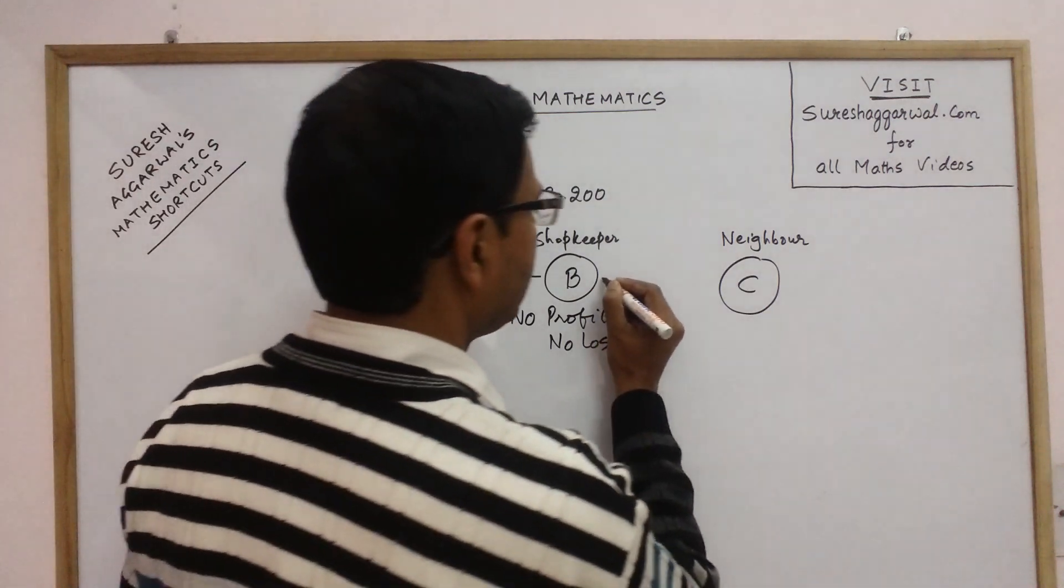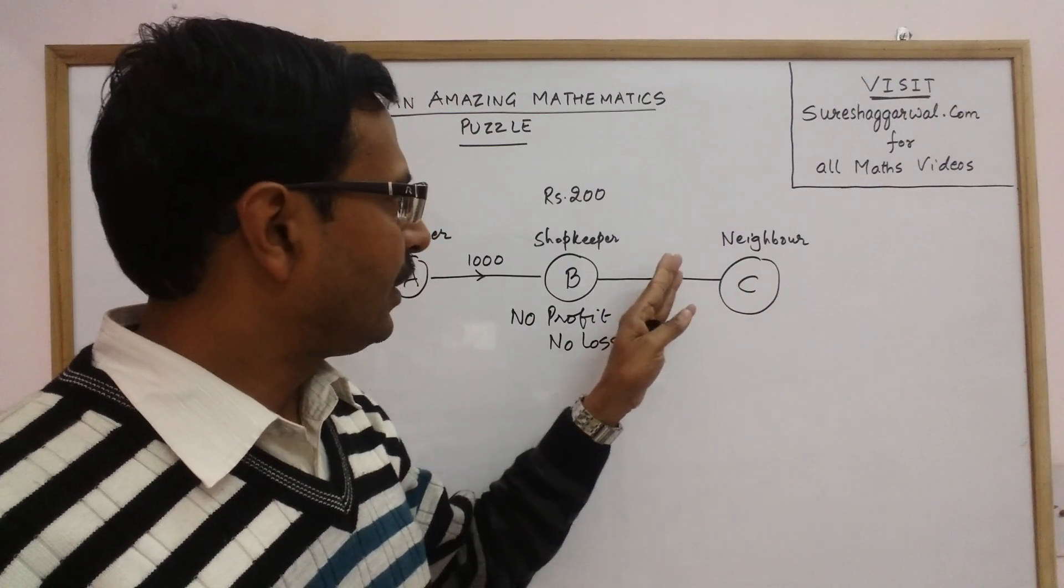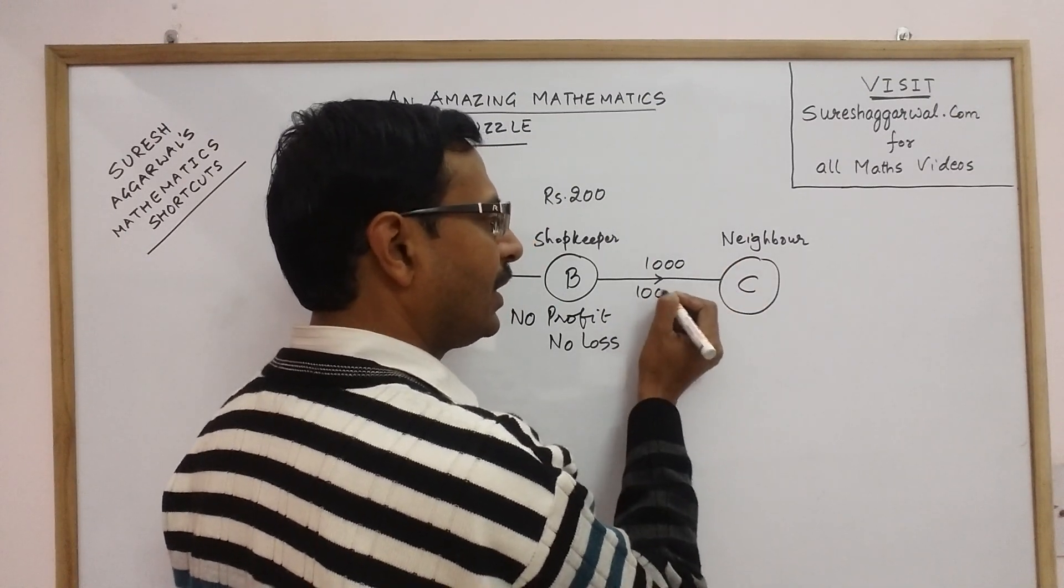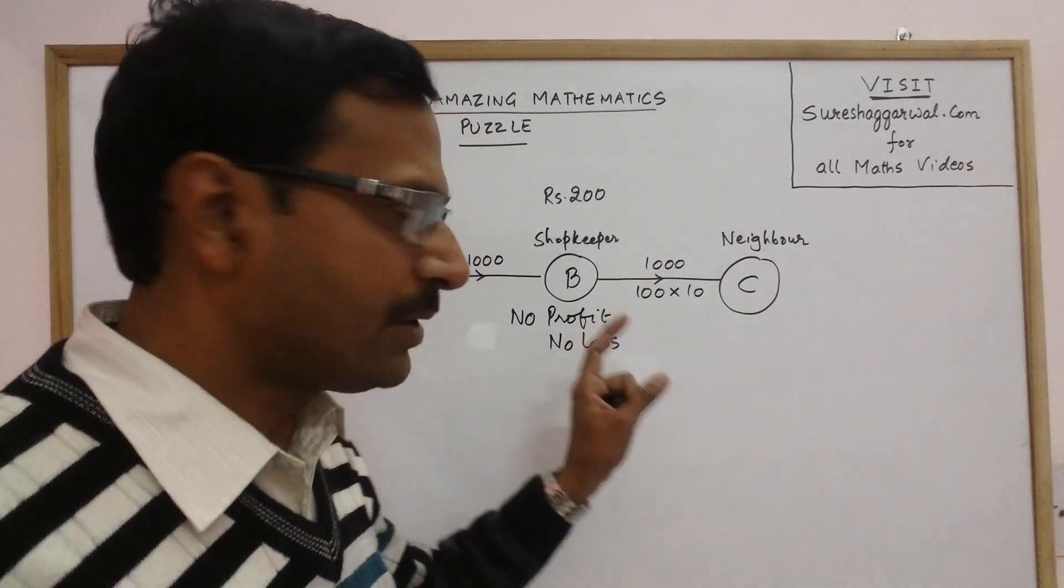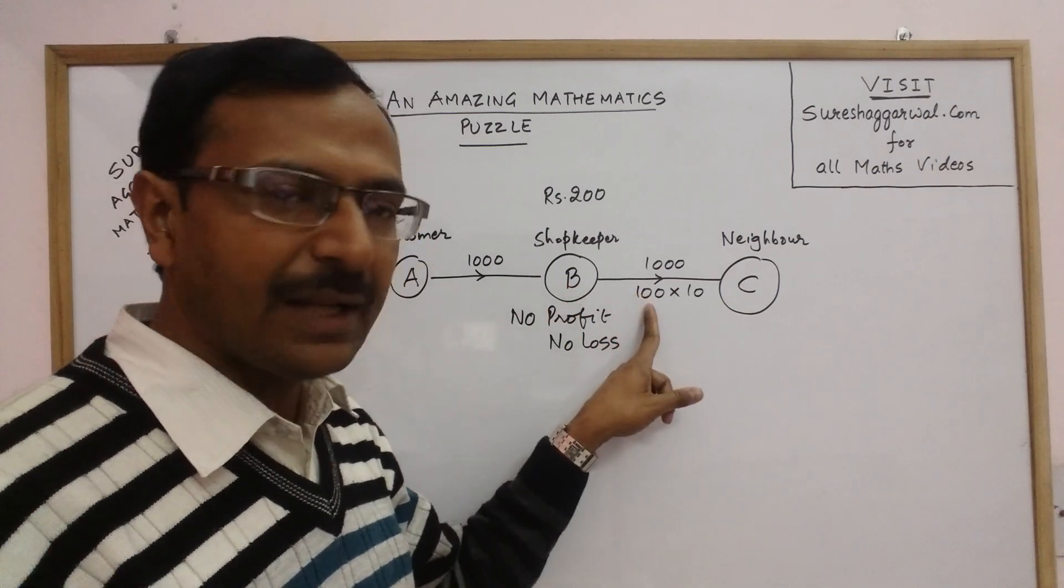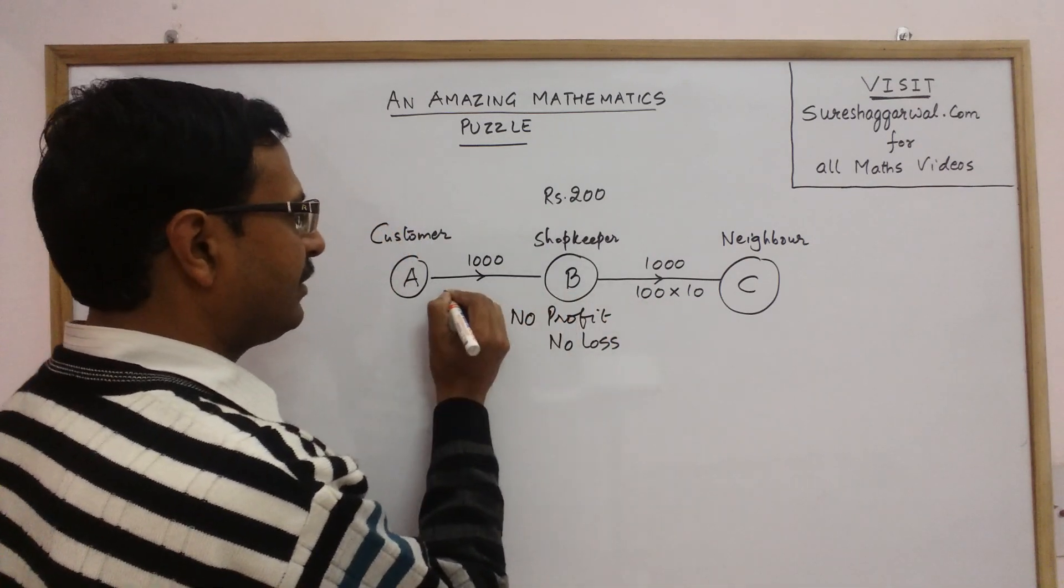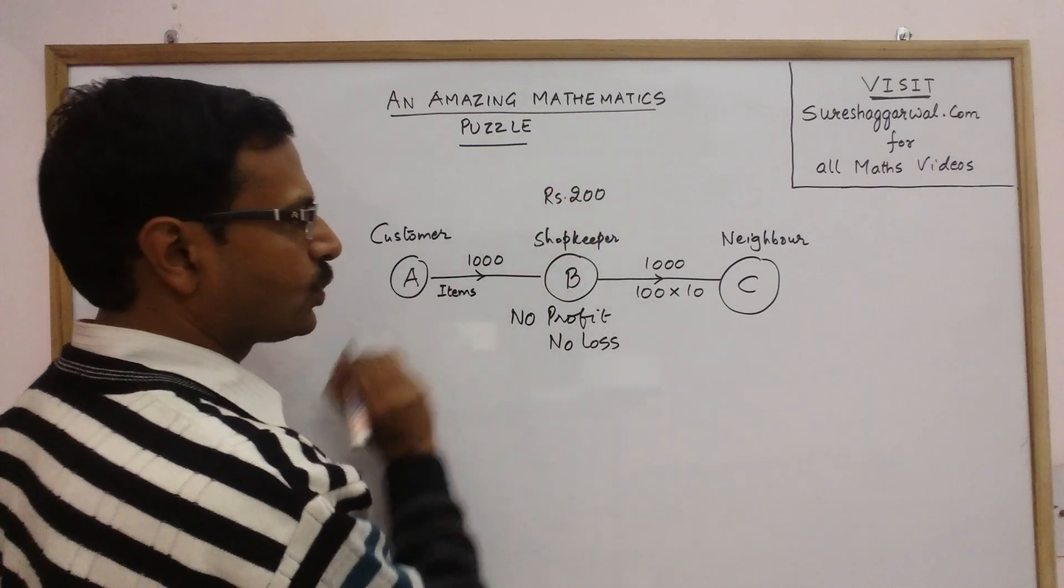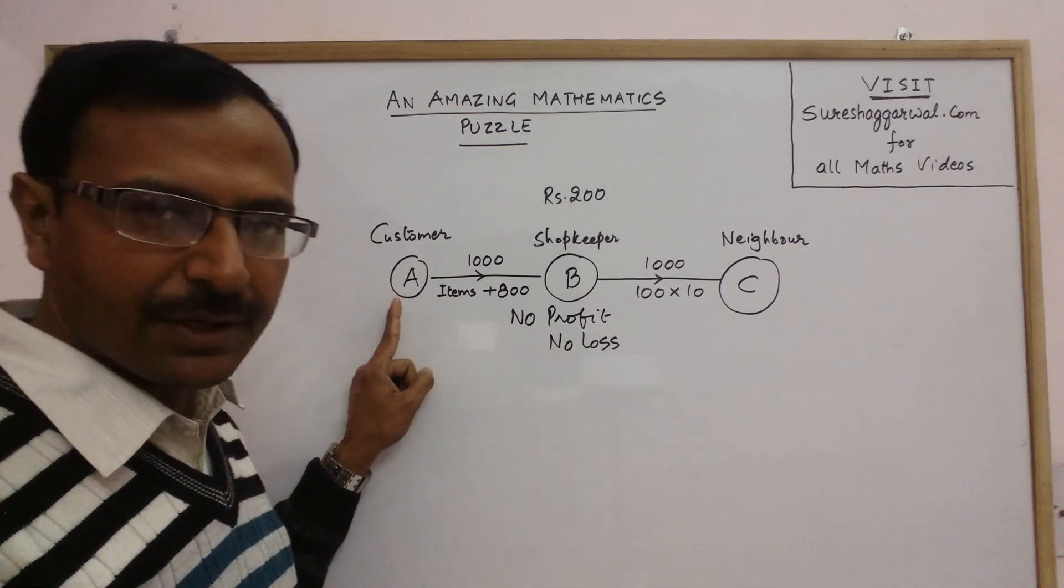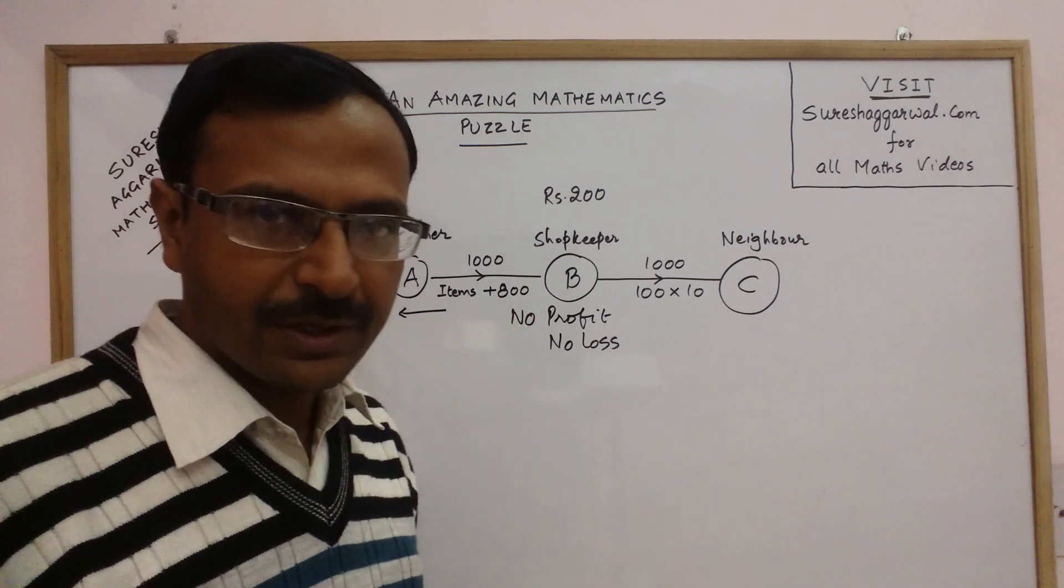So B went to C with that 1000 rupee note and paid it to him, and in turn C gave him 10 notes of 100 rupees each. So B got the 1000 rupee note exchanged. Then B gave A the items worth rupees 200 plus rupees 800 back. So A's account was settled and A went off, taking the items and rupees 800 as change.